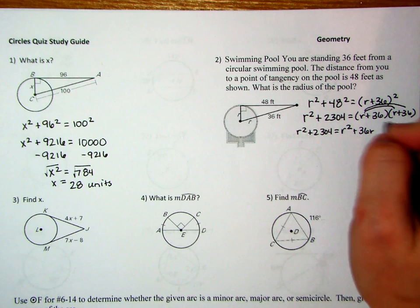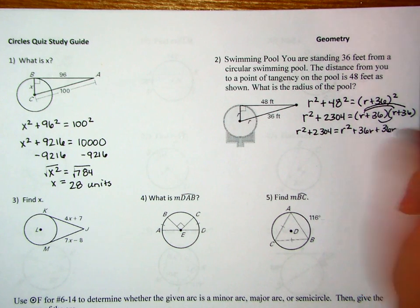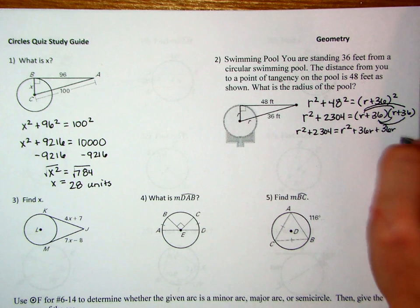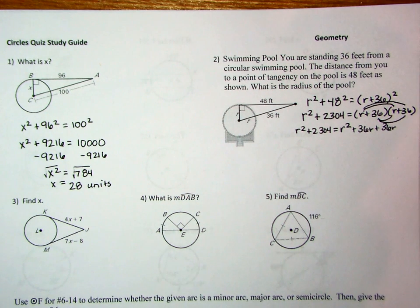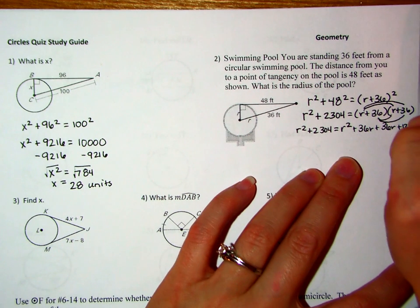Then we have the inside terms, 36 times r, which is 36r. And then we have the last term, so you can kind of see them in there, which would be 36 squared. So 36 times itself is 1296.